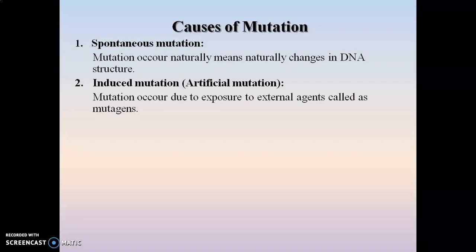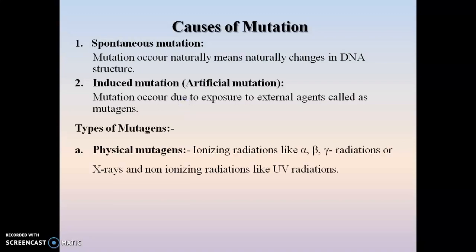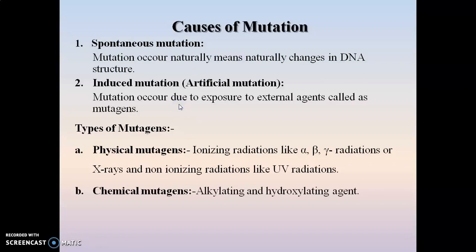Mutagens are of the following types. The first is physical mutagens, which include ionizing radiation and non-ionizing radiation. Ionizing radiations like alpha, beta, gamma, and X-ray radiations have high penetration power, so they can penetrate inside the cell and cause changes in the DNA structure. Non-ionizing radiations such as UV radiation also come under physical mutagens.